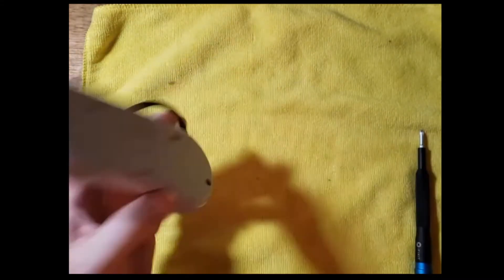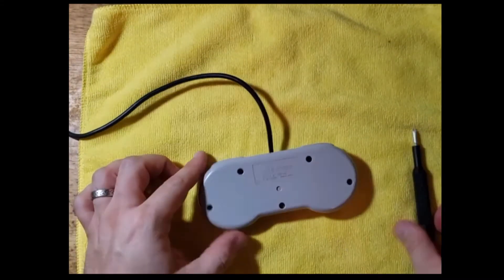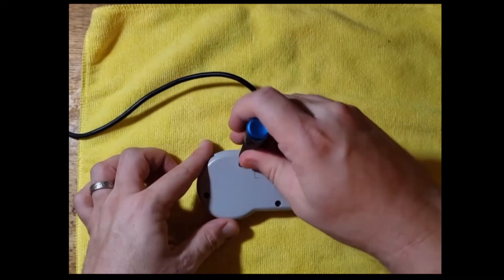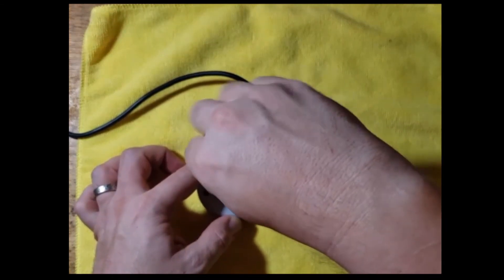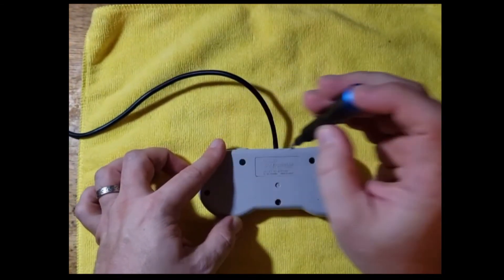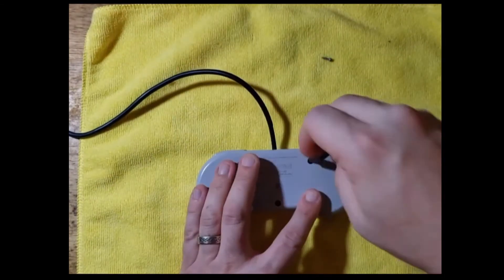This is the step. Flip this sucker upside down. You have your five screws on the back. Go ahead and pop these suckers out.